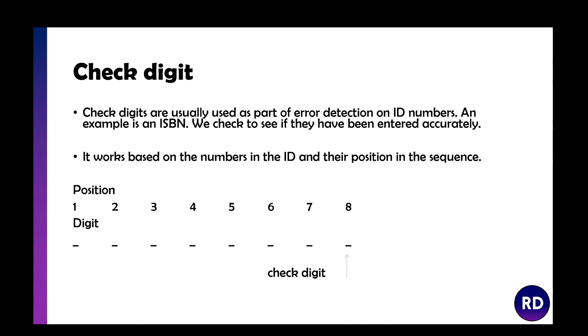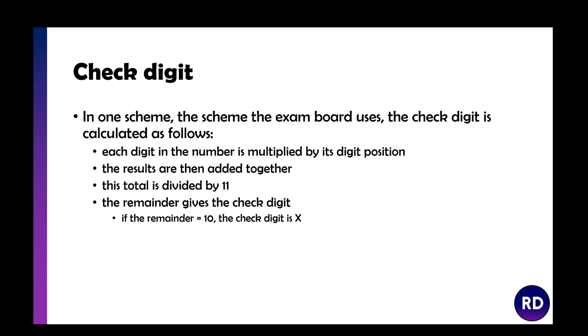You've got the positions: 1, 2, 3, 4, 5, 6, 7, and then the digits. The check digit is usually the eighth digit. For CIE, the Cambridge scheme, each digit in the number is multiplied by its digit position. The results are then added together. This total is divided by 11, and the remainder gives the check digit. If that check digit is 10, then you replace it with an X.